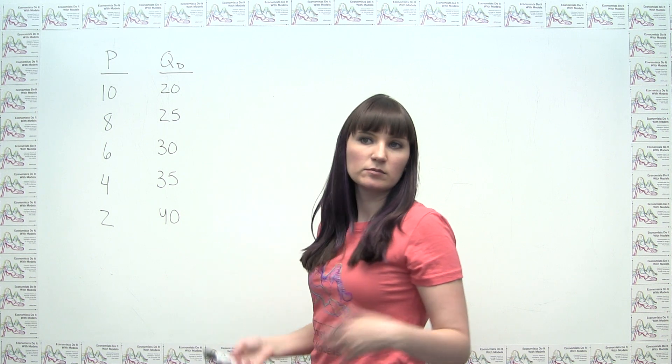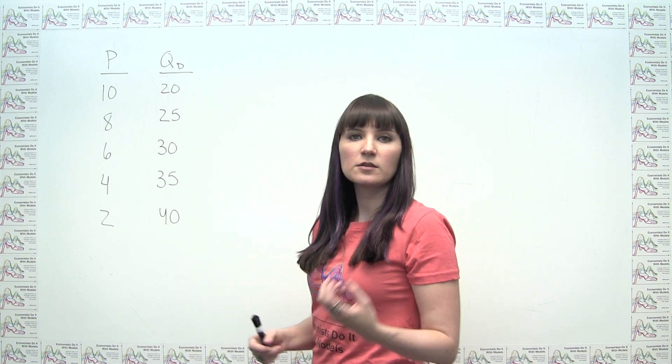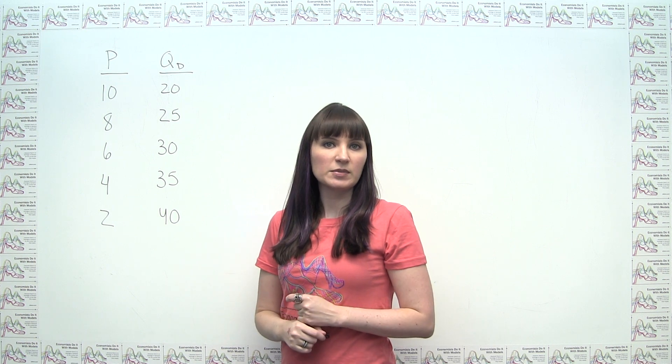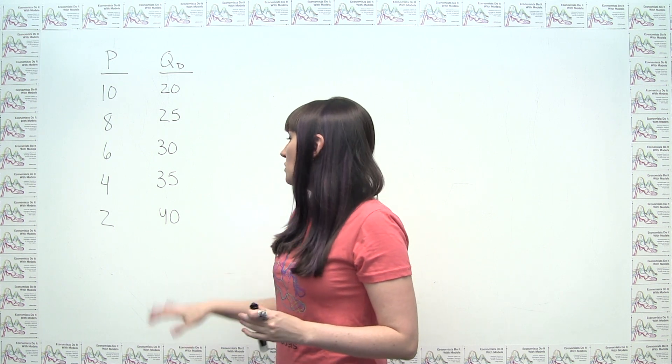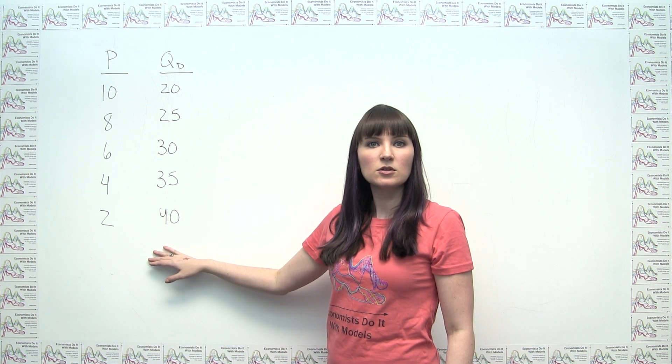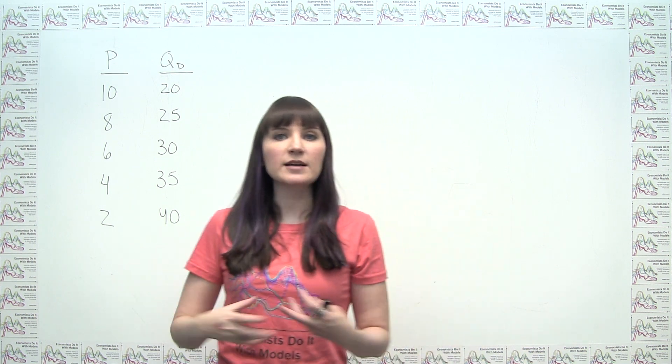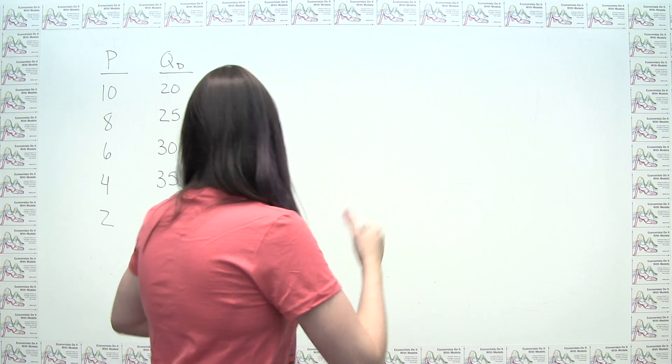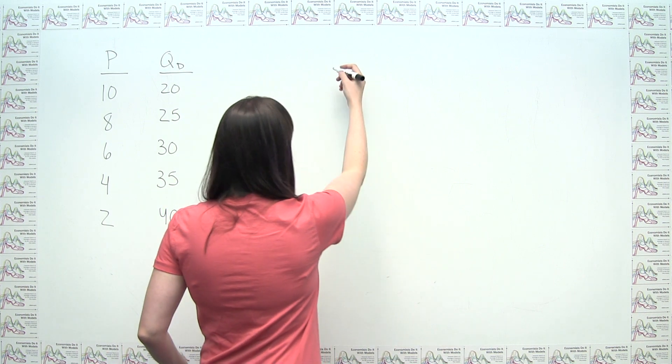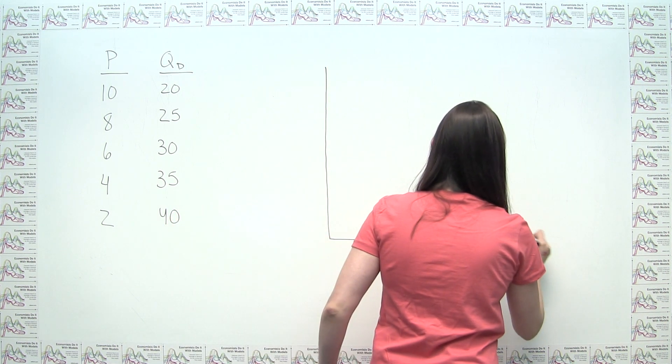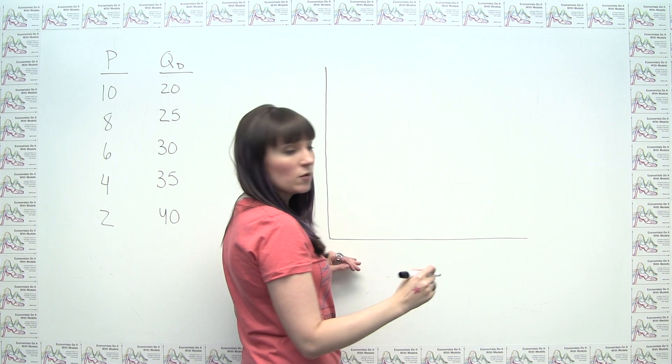the quantity demanded of the item increases. And we said that the law of demand tells us the price and quantity demanded tend to move in opposite directions. So in order to make a demand curve out of what we see here, all we have to do is draw the axes for our demand curve and then plot the points. If I were to go over here, just as a reminder, our demand curve has quantity on the horizontal axis.